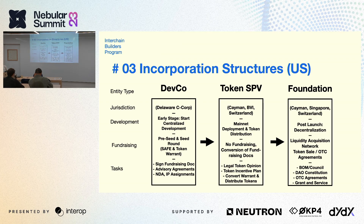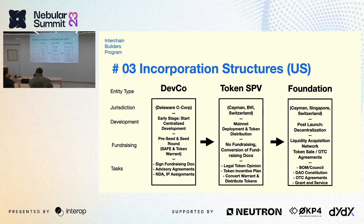The Foundation is usually set up for or around launch. In terms of fundraising at this stage, there isn't typically traditional fundraising — it's more about liquidity acquisition, network token sale agreements, and OTC deals. There are different ways to structure the Foundation: it could be more centralized with a foundation council making decisions, or it could be a legal DAO wrapper with a DAO constitution, which can then sign OTC agreements, grant agreements, and service agreements with the developer company.